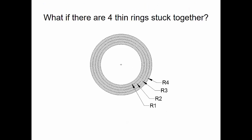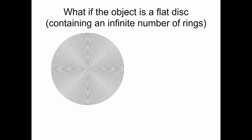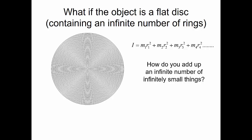What if there are four rings stuck together — ring 1, ring 2, ring 3, and ring 4? We find the total by adding the mass moments of inertia for each ring: M1·R1² plus M2·R2² plus M3·R3² plus M4·R4². What if the object is a flat disk with an infinite number of rings? We could add all those rings together, but with an infinite number of infinitely small rings, the quicker approach is to integrate. The mass moment of inertia equals the integral of R² dm.